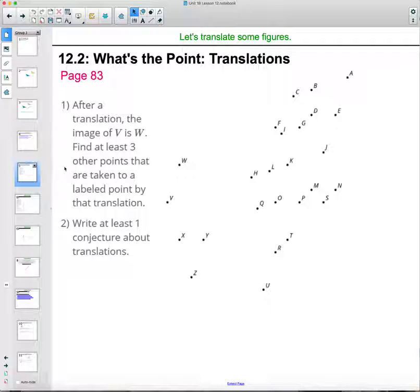Taking a look here on page 83, it says after a translation the image of V is W. So V is the starting point, W is the ending point. After a translation V moved to W. Find some other points in this diagram that do the same thing, that take the same translation as V to W did. At least three. There's going to be more but here's a couple. So are you noticing some, putting them in maybe a different color in your notebook?